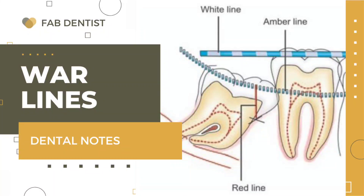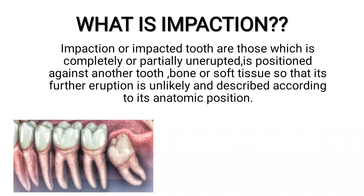Hello guys, welcome to Fab Dentist. In this video we are going to discuss about one of the important topics of impaction — that is WAR lines. Before knowing what WAR lines are, one should know what is impaction. Impacted teeth are those which are completely or partially unerupted, positioned against another tooth, bone, or soft tissue, so that further eruption is unlikely, and described according to their anatomical position.